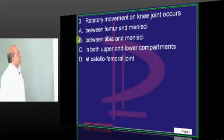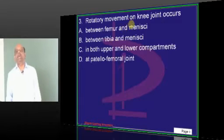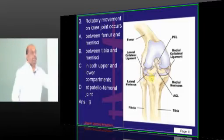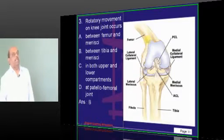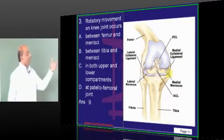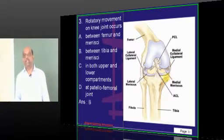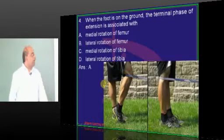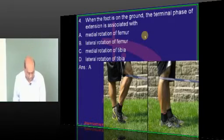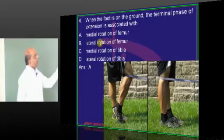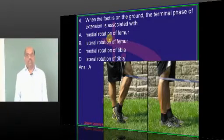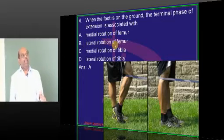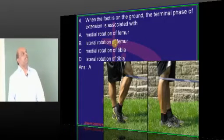At the knee joint, rotation occurs in the menisci and tibia, which are mainly responsible for the rotatory movement at the level of the knee joint — it is not the femur. When you are extending your leg with the foot touching the ground, towards the end of extension, the femur undergoes medial rotation — the locking-unlocking mechanism.